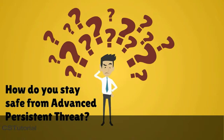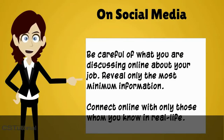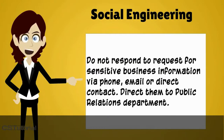How do you stay safe from Advanced Persistent Threat? On social media, be careful of what you are discussing online about your job — reveal only the most minimum information. Connect online only with those whom you know in real life. For social engineering, do not respond to requests for sensitive business information via phone, email, or direct contact. Direct them to the public relations department.